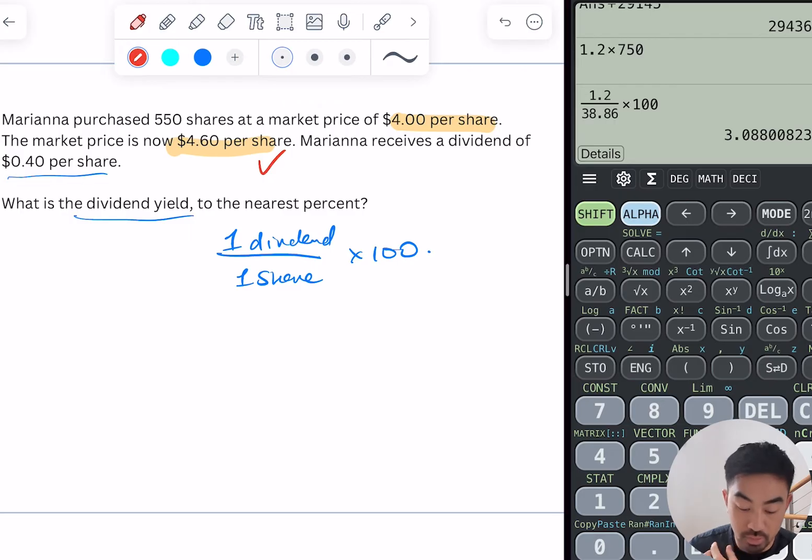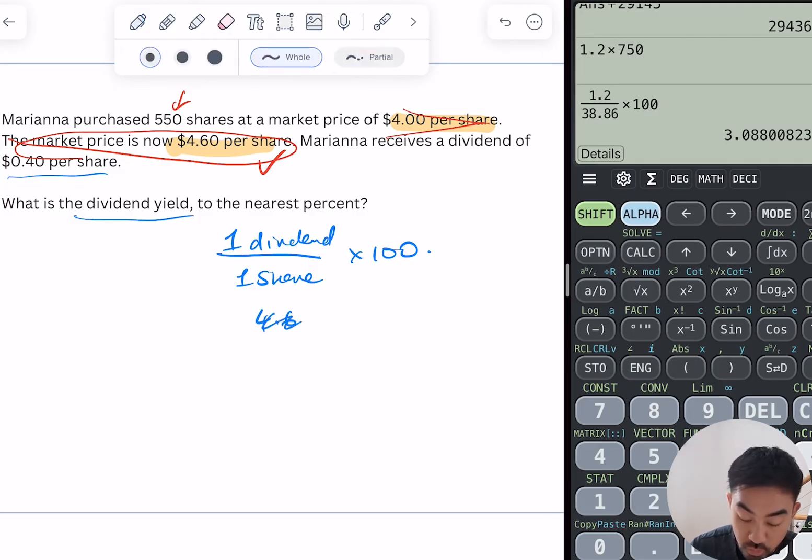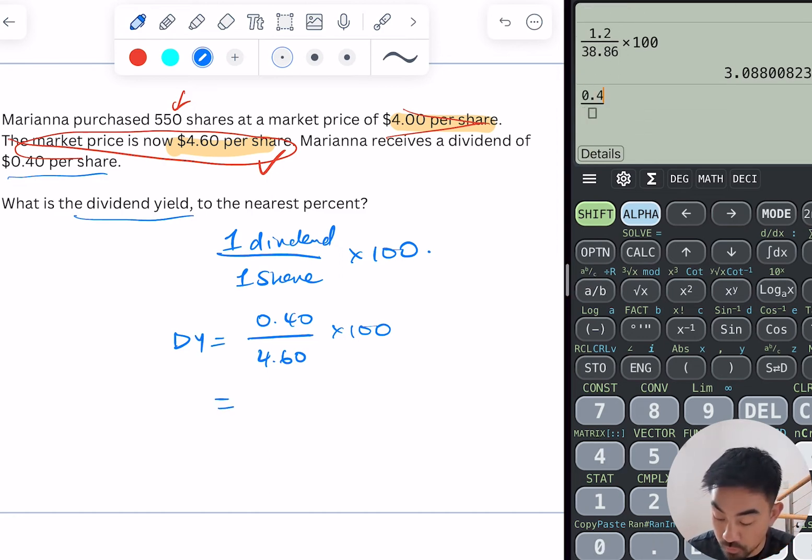So you can ignore the price that she purchased it for, and in fact you don't even need this 550 to work out the dividend yield. So $4.60, or sorry, the dividend is 40 cents, 0.40 over $4.60 times 100, and that'll be your answer. So 0.4 over 4.60 times 100, so 8.695%, and you can round that up if you want. I'll just leave it at that.